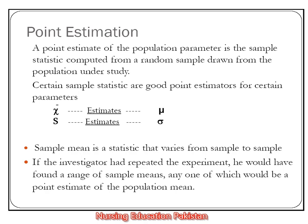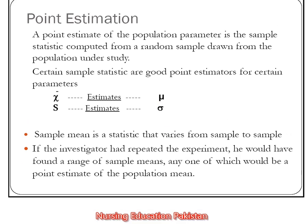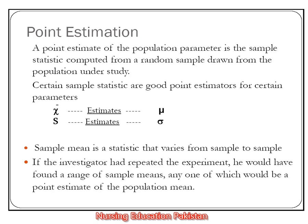We have two important things in point estimation: the mean value and its standard deviation, which we denote as mu and sigma. The sample mean is basically a value that varies from sample to sample. If we have a population and draw different samples, we get a different sample mean each time.